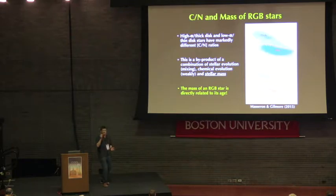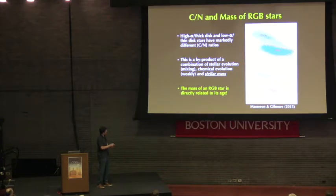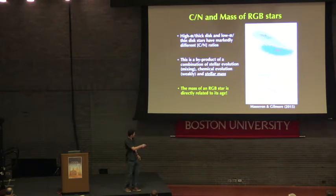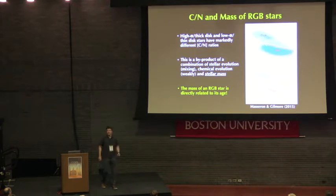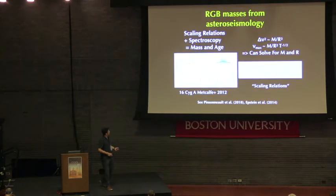In a very insightful paper, Thomas Masseron and Jerry Gilmore from Cambridge looked at the abundances of carbon and nitrogen in a sample of APOGEE stars. Plotting alpha against iron, the carbon-over-nitrogen ratio of the high-alpha thick disk population is very different from that of the low-alpha thin disk stars — the high-alpha stars have larger carbon over nitrogen. Carbon over nitrogen is determined by a combination of stellar evolution, chemical evolution, and stellar mass, and if mass can lead to age if you know the spectroscopic parameters — as has been explained to us — then we can derive ages.